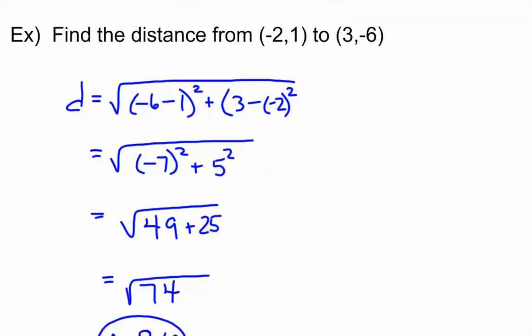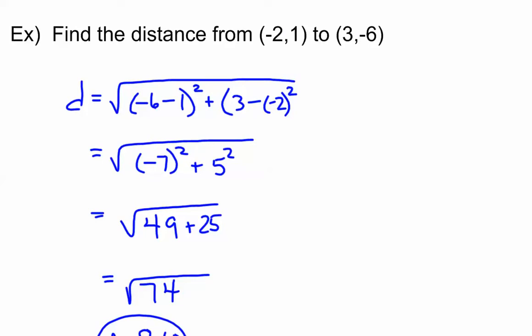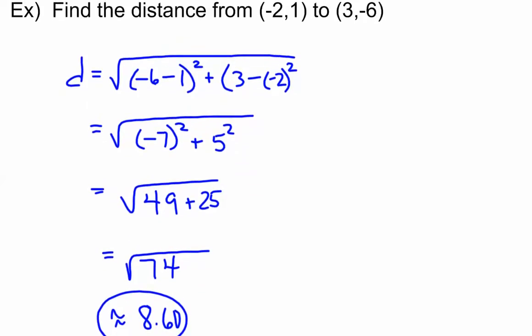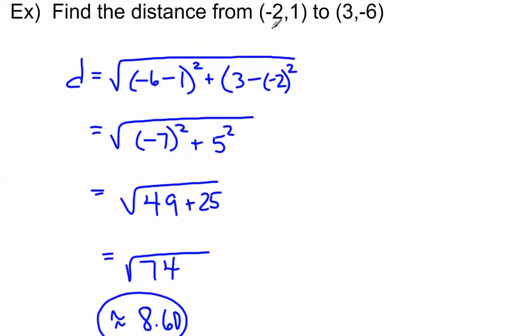All right, let's take a look at another example here. If I'd want to find the distance from negative 2, 1 to 3, negative 6, paying attention to those minus signs here, okay? So we're going to do the negative 6 minus 1 quantity squared. For some reason, I did my y's before my x's. I don't know. It really doesn't matter when you're adding. And then 3 minus the negative 2 and quantity squared.